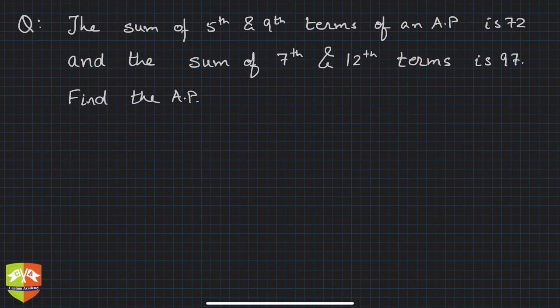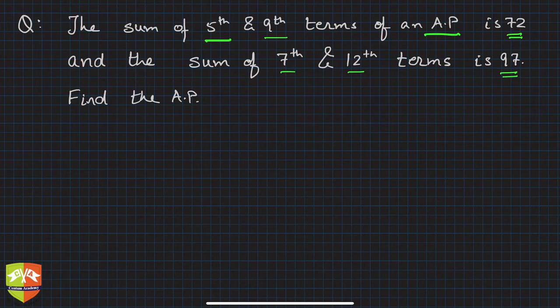Welcome friends to another session on problem solving on arithmetic progression. In this problem, it's been given that the sum of fifth and ninth terms of an AP is 72, and the sum of seventh and twelfth terms is 97. These are the two conditions given. You have to find the AP.